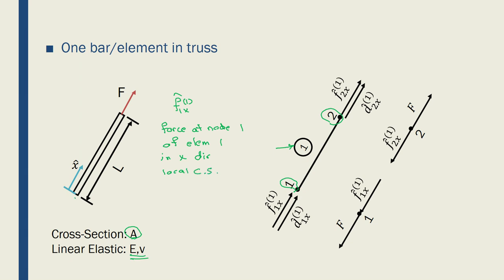And the local coordinate system, as I said, is this coordinate system. And then if I said d2x, for example, with 1 and the hat, it means displacement of node 2 in the x direction of element 1, and it's in the local coordinate system with that hat there. And again, because the direction of the coordinate system, the local coordinate system is in that direction, both forces and displacements of all the nodes are in the positive direction of the local coordinate system.